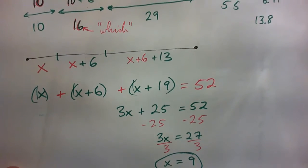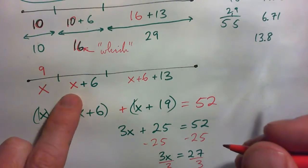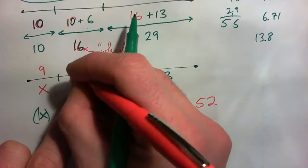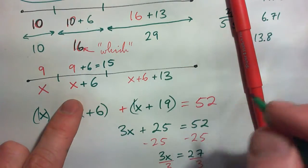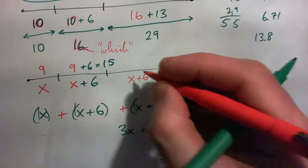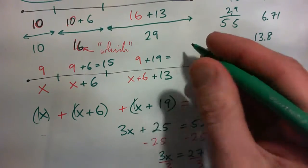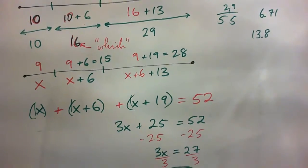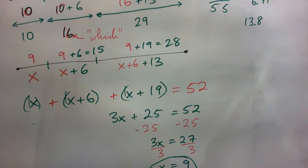So if X is 9, that means X is 9. That means this length here is X plus 6, so that's going to be 9 plus 6, which is 15. And what about this length? This length became X plus 19, so 9 plus 19, which is 28. So our lengths are 9 meters, 15 meters, and 28 meters.